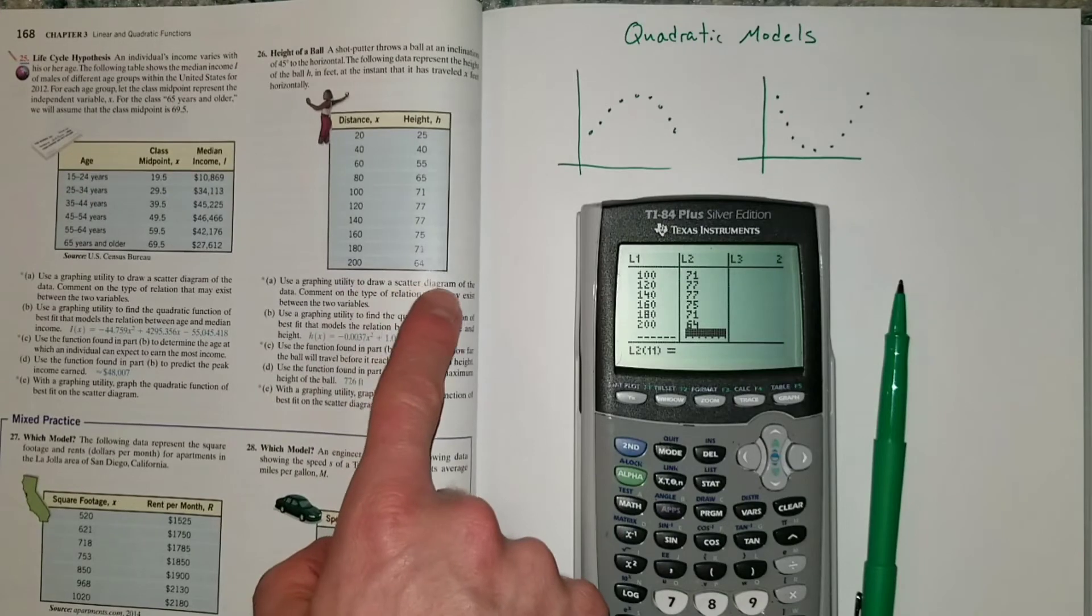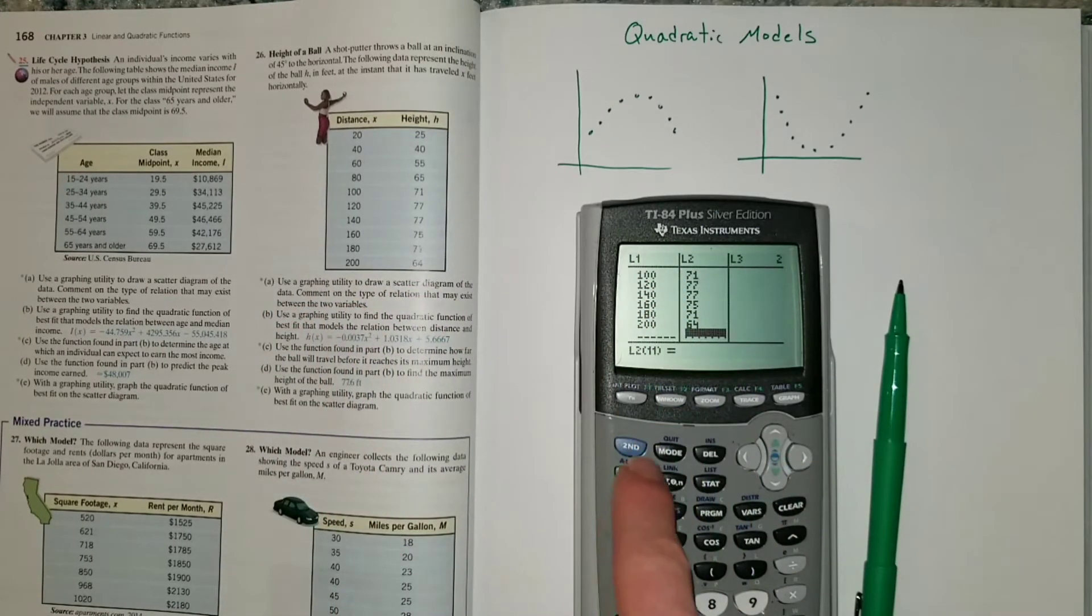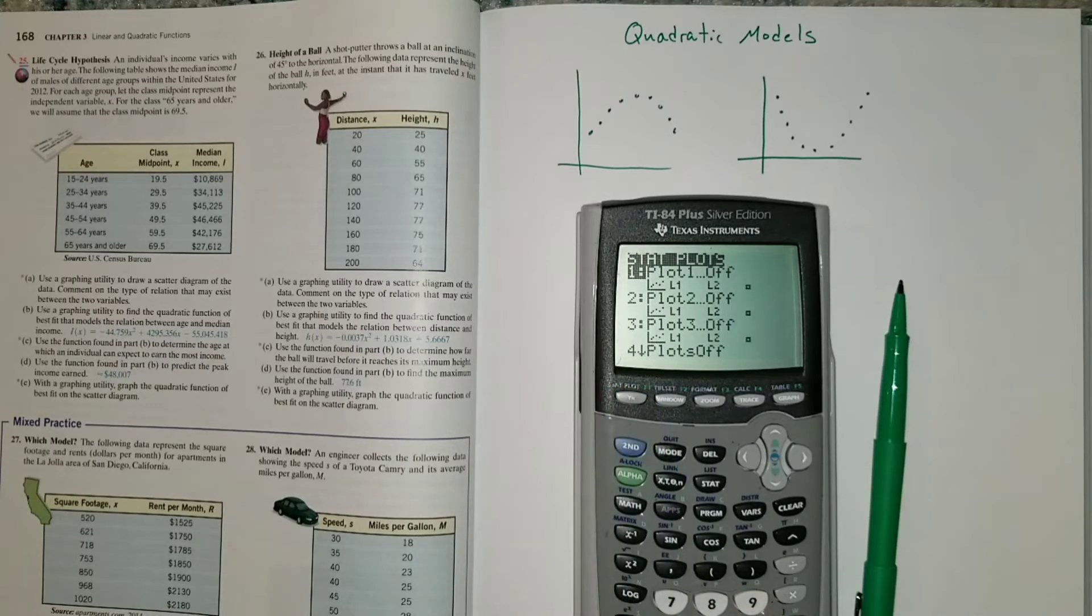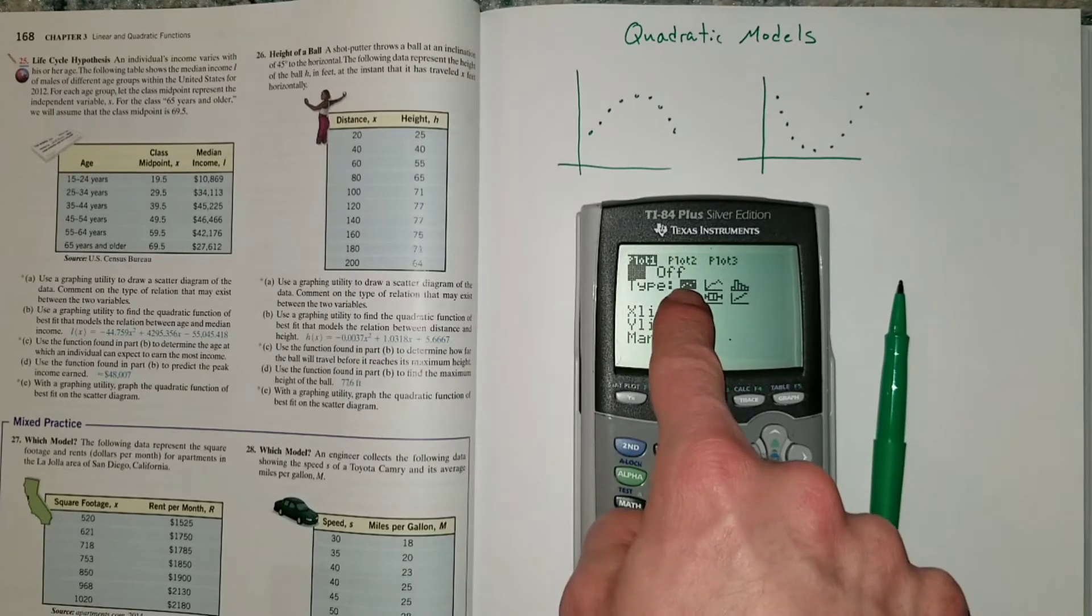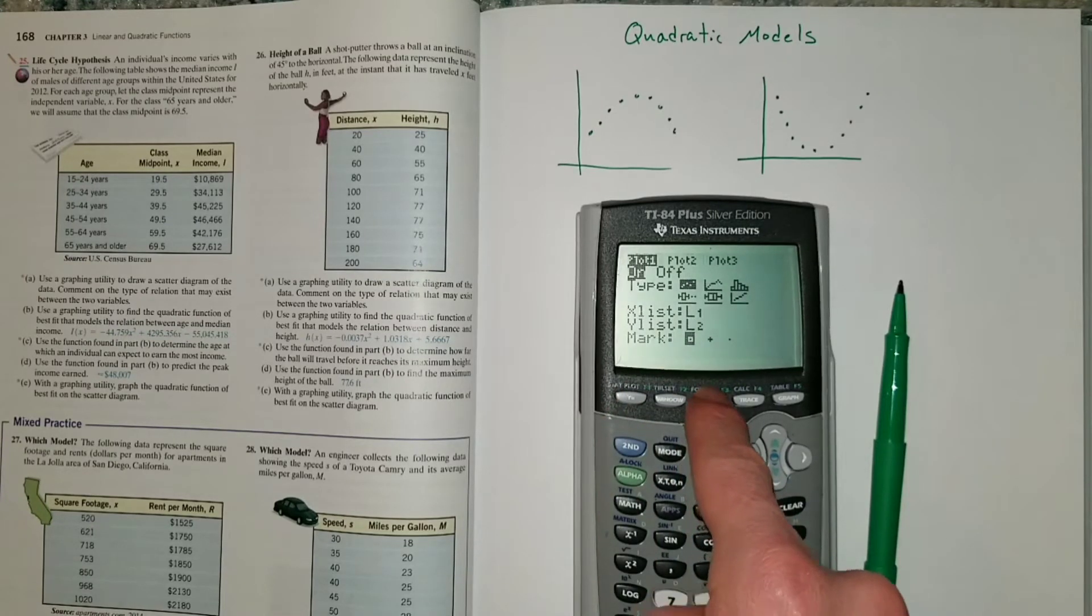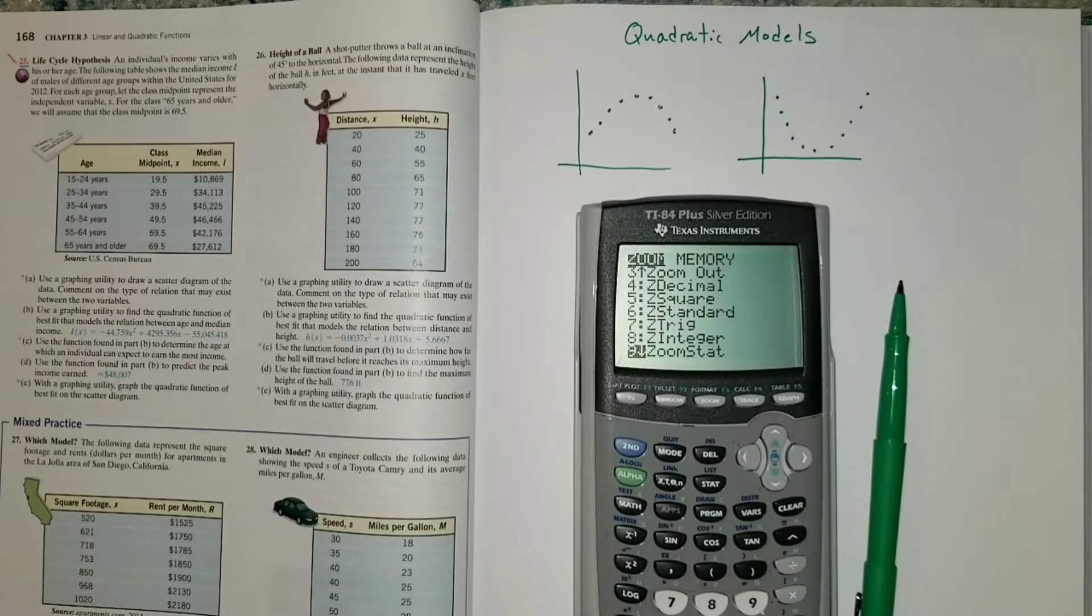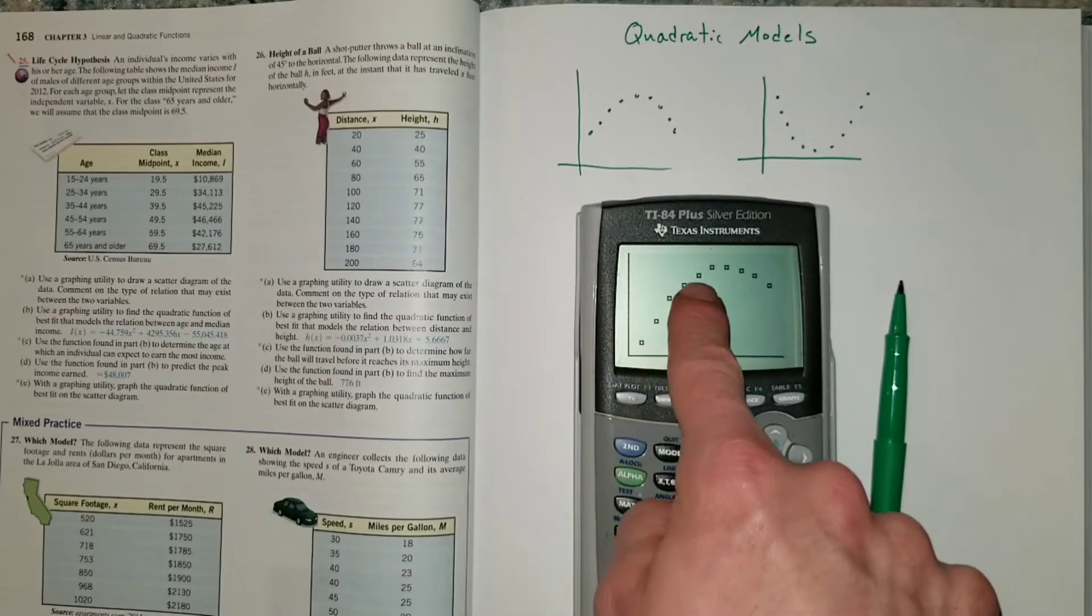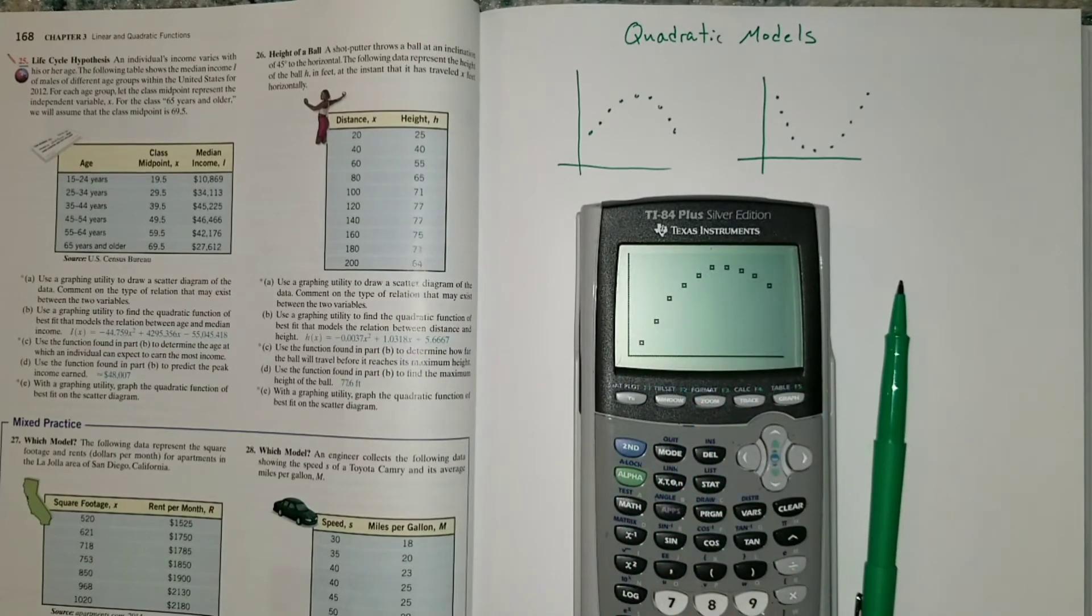Here it says use a graphing utility to draw a scatter diagram of the data. So that's the first thing we'll do. I enter the data, then I'm going to quit, and I'm going to go to my scatter plot, which is the second feature of the Y equals screen. It says stat plot. We did this before with linear models, and now we're doing it again with quadratic, so it's going to be very similar instructions on the calculator. So I'm going to hit enter for plot one. I want to turn that on. I'm going to keep it on the scatter plot. L1 and L2 are what I'm using. My mark is the box. And then I'm going to go to zoom, and down to stat, zoom stat. That will give me an appropriate window for this set of data. And there it is.